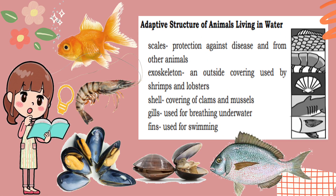Animals have body structures that enable them to live in water and on land. Animals that live in water are called aquatic animals — they have scales, outside skeletons or exoskeletons, shells, and gills. Scales are used for protection from diseases and harmful objects, and for swimming. Most fish have scales. Lobsters and shrimps have an outside skeleton called an exoskeleton, while mussels and oysters have shells. Gills are organs responsible for breathing in water.